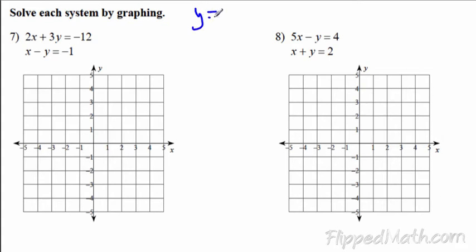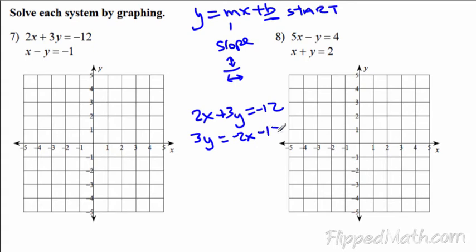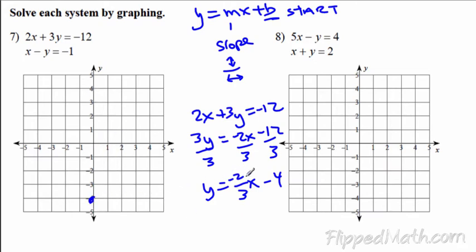Solving by graphing — remember, we've got to get these into the form y = mx + b, slope-intercept form. The b is your y-intercept where you start, and m is your slope, written as a fraction: the numerator tells you up and down, the denominator tells you left and right. For problem 7, solving 2x + 3y = −12: subtracting 2x and dividing by 3 gives y = −(2/3)x − 4. Starting at −4, going up 2 and left 3, we can draw that first line.